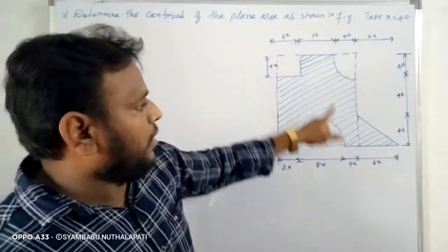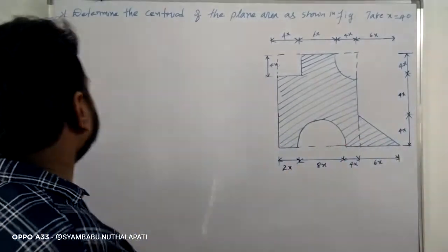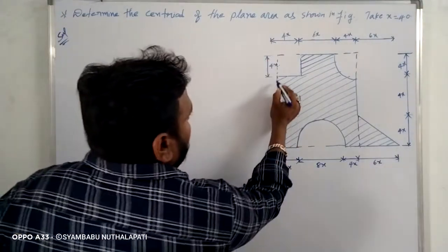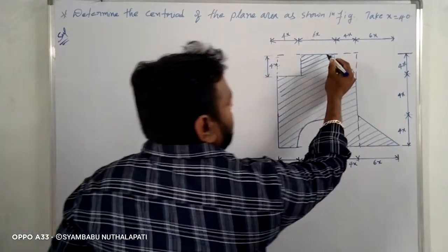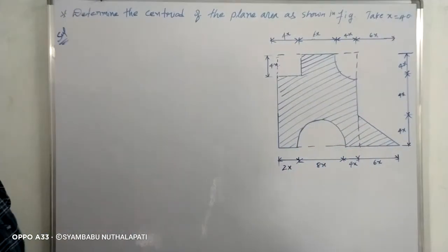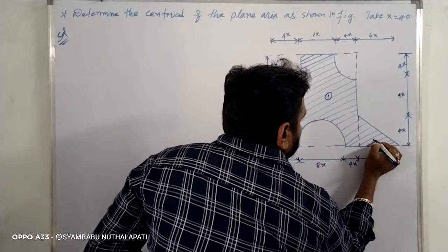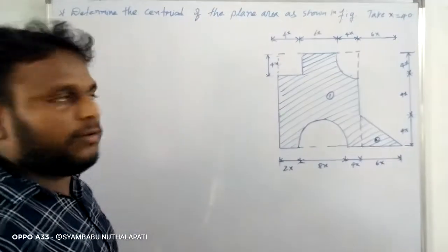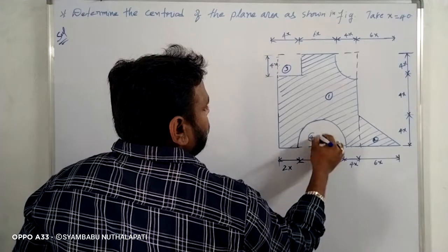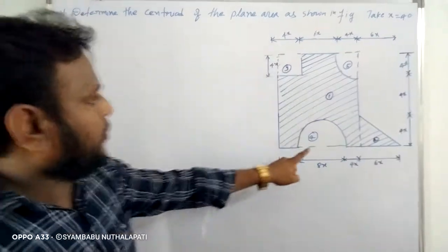Area A is 6x into 4x. The central area is to be found. Individual component areas: this area is 1x and 2x; this area is 3x; this is 4x; this is 5x. So total, there are five component areas to consider.